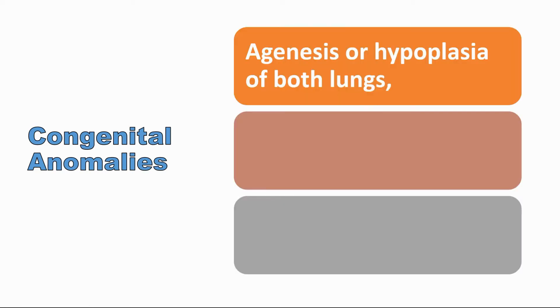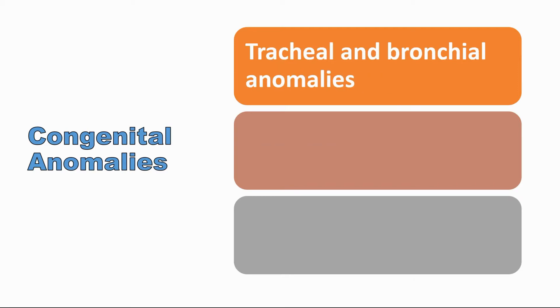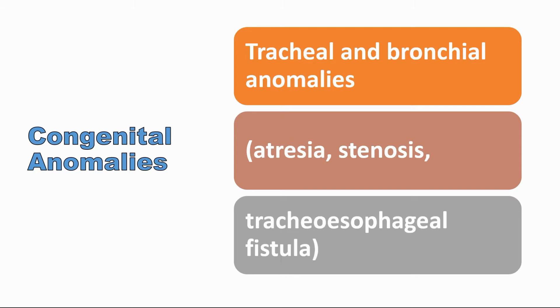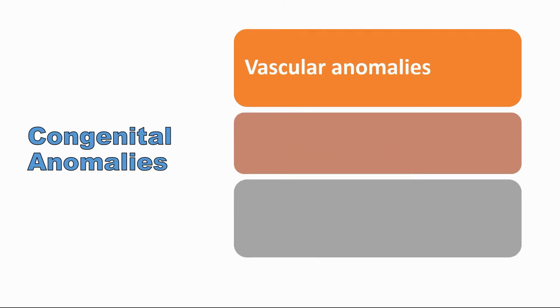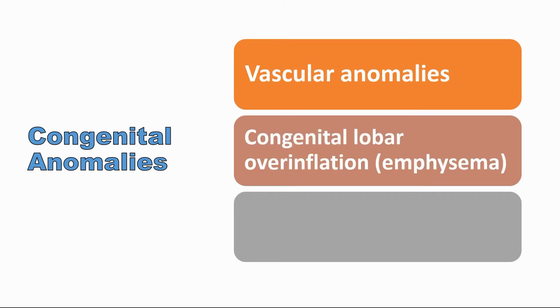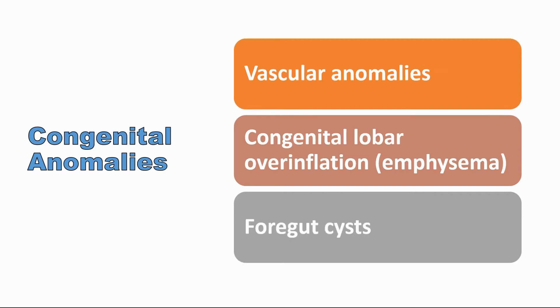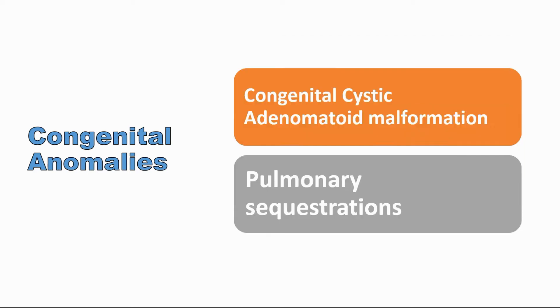Congenital anomalies or developmental defects of the lungs include agenesis or hypoplasia of both lungs, one lung, or even a single lobe of a lung. It also includes tracheal and bronchial anomalies, which include atresia, stenosis, and tracheoesophageal fistula. We have also vascular anomalies of the lungs, congenital lobar overinflation or emphysema, foregut cysts, congenital cystic adenomatoid malformation, and pulmonary sequestration.